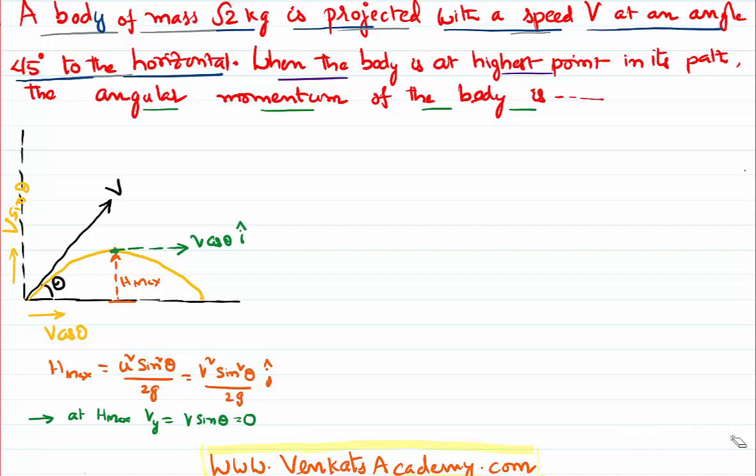Now you want to calculate at this maximum height what is the angular momentum. Let us see what we mean by angular momentum. Angular momentum is defined as r bar cross p bar, which is r bar cross m v bar.